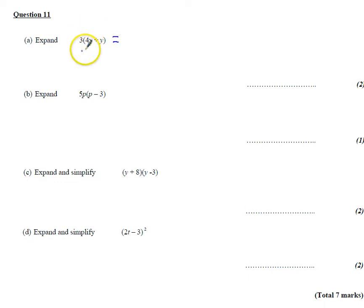3 times 4x is 12x, and 3 times y is 3y, so you should just get 12x plus 3y.